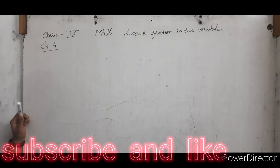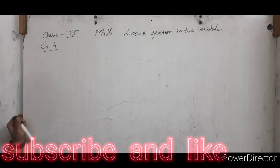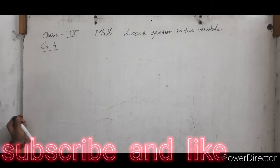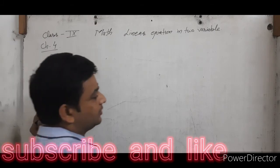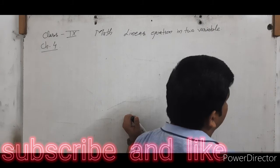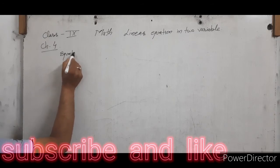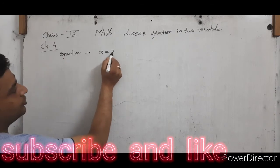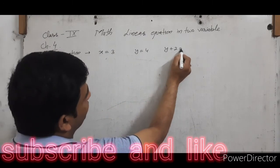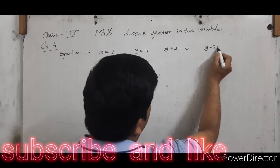First, let's understand what an equation is — as you studied in 7th and 8th class also. An equation means if we are equating two parts: like 2 equals to 2, X equals to 2, or 5 equals to 3 plus 2. Similarly, Y plus 3 equals to 0, X equals to 3, Y equals to 4, Y plus 2 equals to 0, Y minus 3 equals to 0, etc.